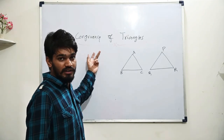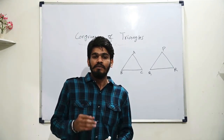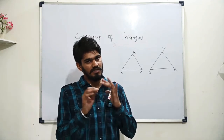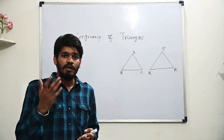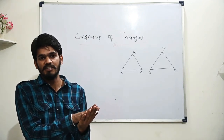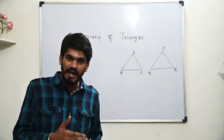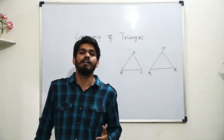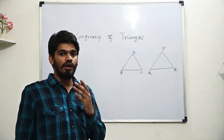First of all, let's get the meaning of congruency and what is congruent. When two objects are equal in shape and size — shape means angle, size means side — such that if I place one object over the other and I see from the top, I won't be able to see the object placed below. Such objects which coincide with each other exactly, or we can say one object covers the other completely and exactly, are known as congruent objects. And this property is known as congruency.